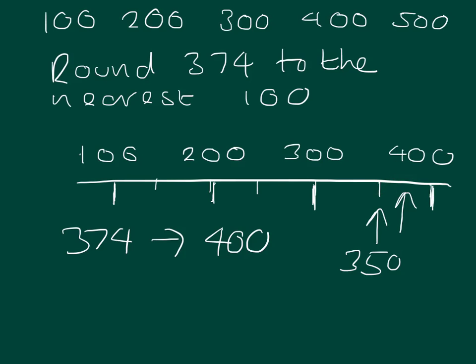So 350 or more before 400 rounds up to 400. And what if we were given a number that's like 222? Well, 222 is between 200 and 300, but it is less than the halfway mark. The halfway mark is 250. So 222 is going to be about here. So 222 to the nearest 100 is 200. So that's rounding to the nearest 100.